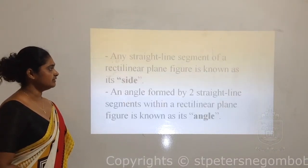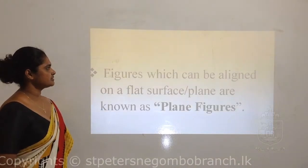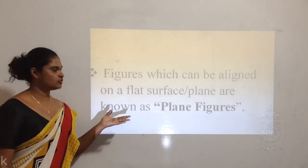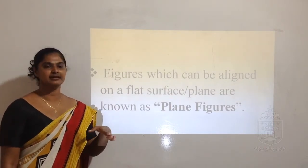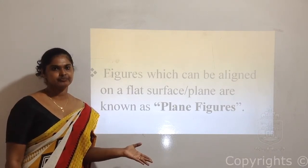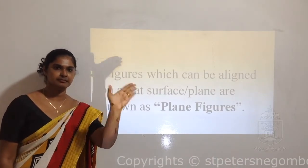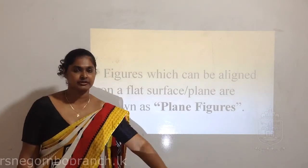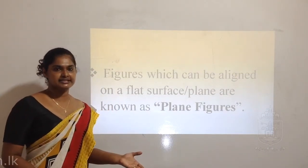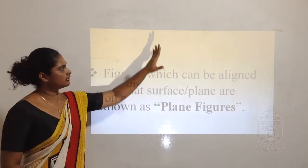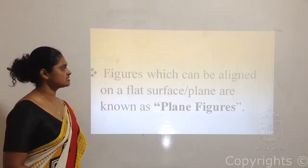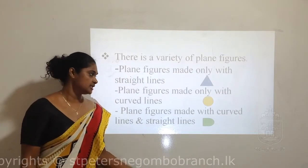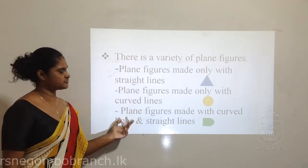Let's go through today's summary. First we learned about plane figures - figures that are aligned on a plane or a surface. The plane can be horizontal or vertical. The whiteboard is a vertical plane, and a table is a horizontal plane. Figures nicely kept flattened or aligned on a horizontal or vertical surface are plane figures. We also learned how plane figures are formed - some with straight line segments, some with curved lines, and some with both.